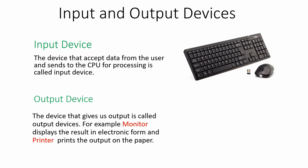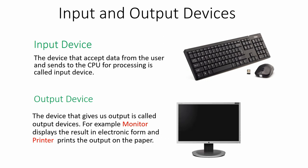Similarly, output devices are those devices that give us output. For example, the monitor displays the result of processing — we can see the result on the monitor, that is why the monitor is an output device. We can also print information on the printer, so the printer is also an output device.